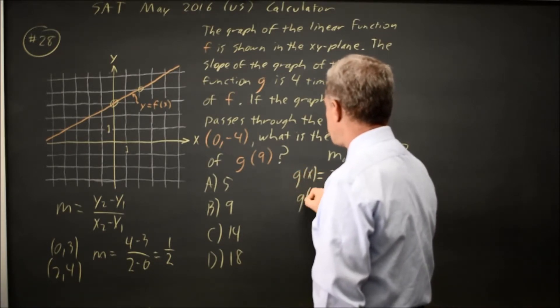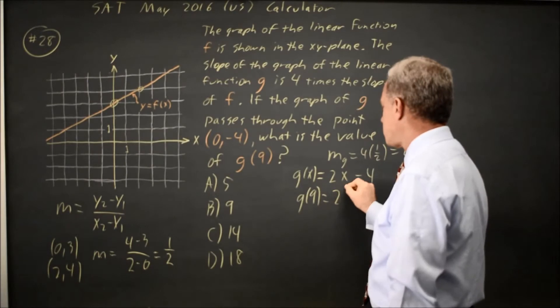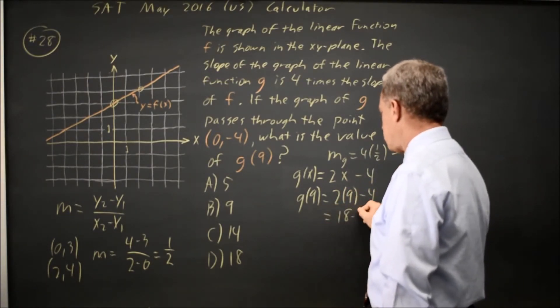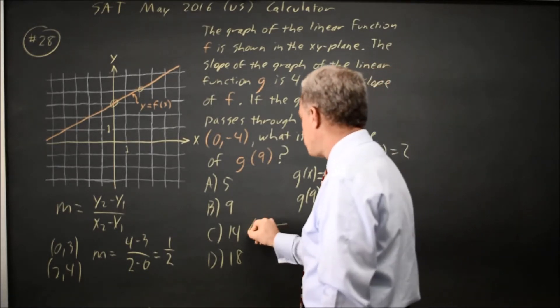So g of 9 says what's in the parentheses, you take twice that number and subtract 4. So that's 18 minus 4 equals 14, which would be choice C.